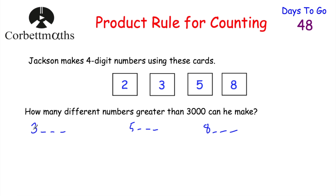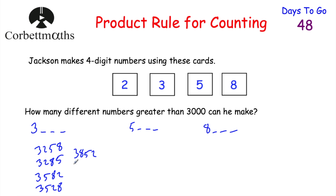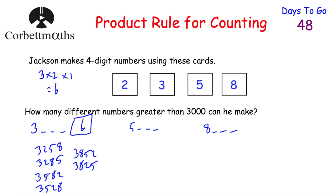For numbers in the 3,000s, the 3 must be in front. The remaining digits — 2, 5, and 8 — can go in any order. For example: 3,258; 3,285; 3,582; 3,528; 3,852; or 3,825. Using the product rule: there are 3 choices for the second digit, 2 for the third, and 1 for the last. So 3 × 2 × 1 = 6 possible numbers in the 3,000s.